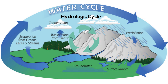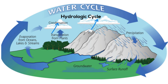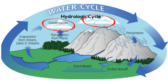Let's start this cycle with the evaporation of water from the surface of the ocean. As this moist air is lifted, it cools and water vapor condenses. It may form clouds. In fact, clouds are made up of tiny water droplets and ice crystals that are so small they can float in the air.